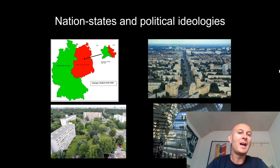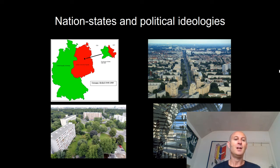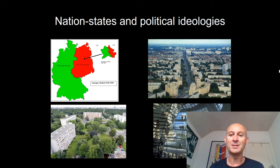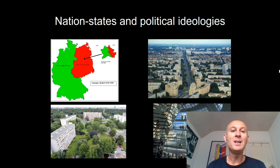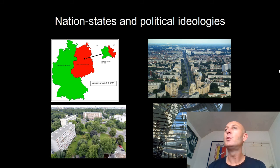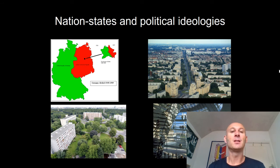On day two, we look at the role of political ideologies and nation states in the construction of the city. Remember that Berlin was divided during the Cold War between East and West. As a result, Berlin was like an experimental zone for the planning, architecture, and urban policies of different political ideologies — socialism and communism in the East, capitalism and liberalism in the West — and we can walk across East and West Berlin today and see the differences that political ideology can make to a city.